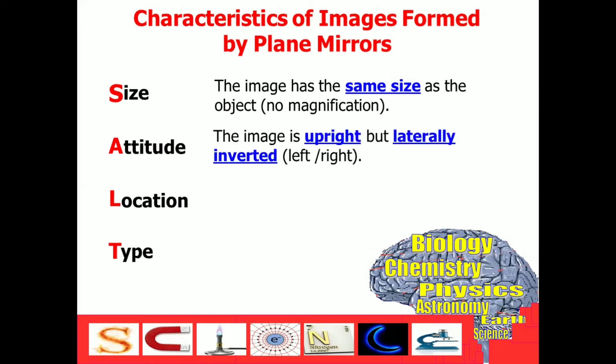For the attitude, we always form an image that is upright but laterally inverted. Meaning, the left becomes right and the right becomes left. So, we describe it as laterally inverted.